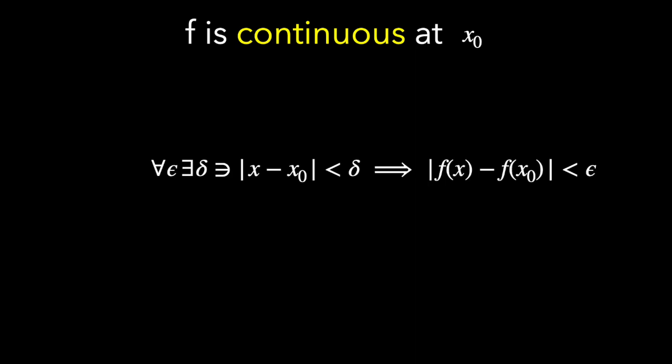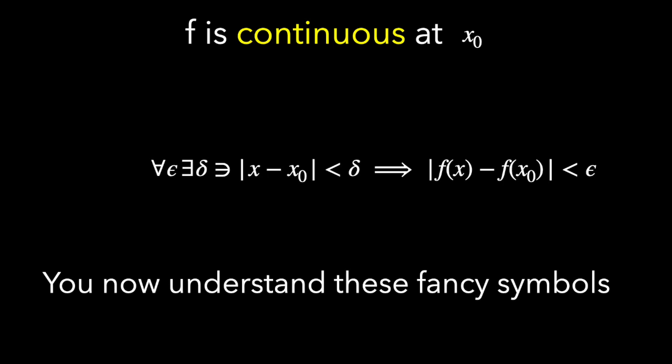And in that case, f is continuous. The limit exists, and the limit is f of x sub 0. And now you understand all these fancy symbols.